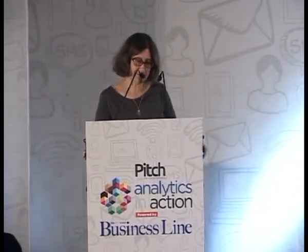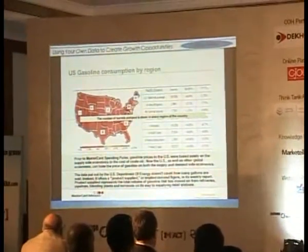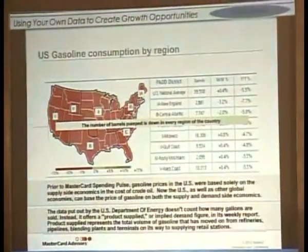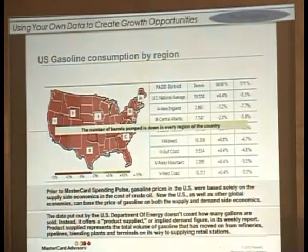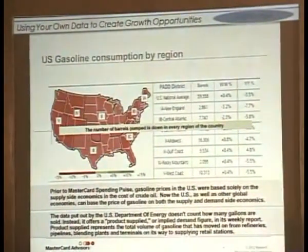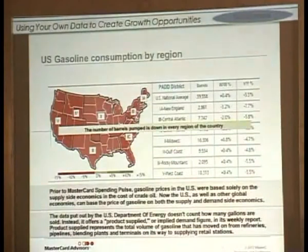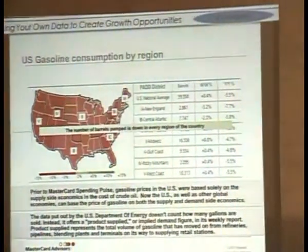They studied U.S. gasoline consumption. MasterCard has something called a Spending Pulse. Prior to this Spending Pulse focused on U.S. gasoline, prices in the United States were based on the supply side of the chain — basically, pricing of gas was driven by supply. MasterCard understood, though, that they could begin to dimension and understand demand, because they had all the transactions that could look at consumption through retail, gas stations, and all different types of consumption, giving a view of how consumers were using gasoline and the demand side of the equation.